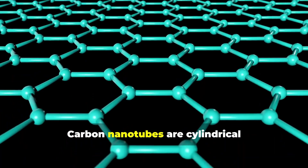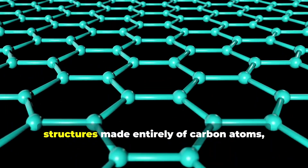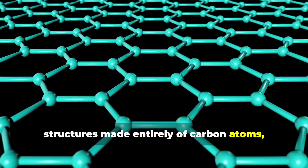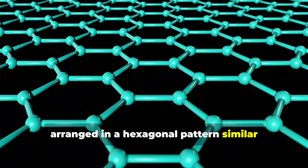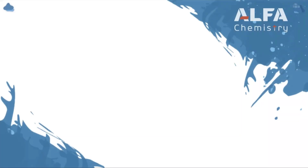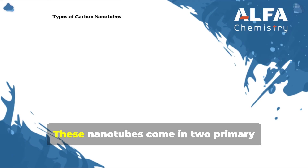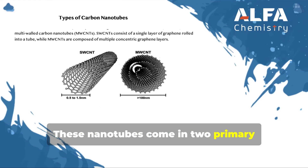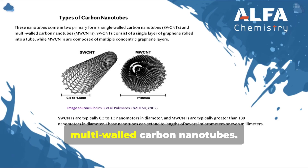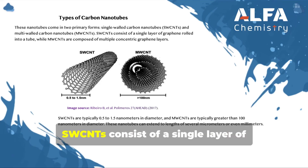Carbon nanotubes are cylindrical structures made entirely of carbon atoms, arranged in a hexagonal pattern similar to that found in graphene. These nanotubes come in two primary forms: single-walled carbon nanotubes and multi-walled carbon nanotubes.